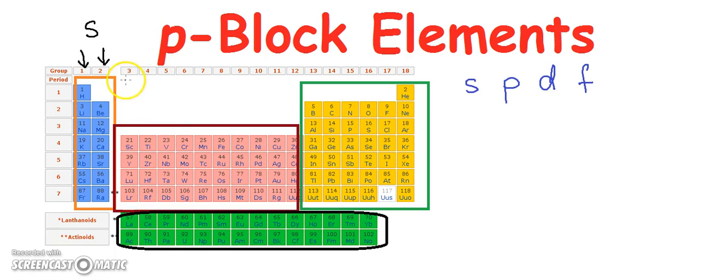From group number 3 till group number 12, we have D block elements, and here below portion elements, these are the F block elements.